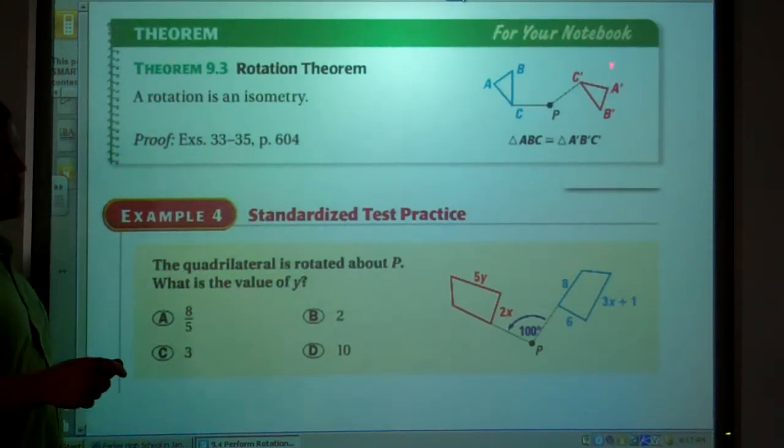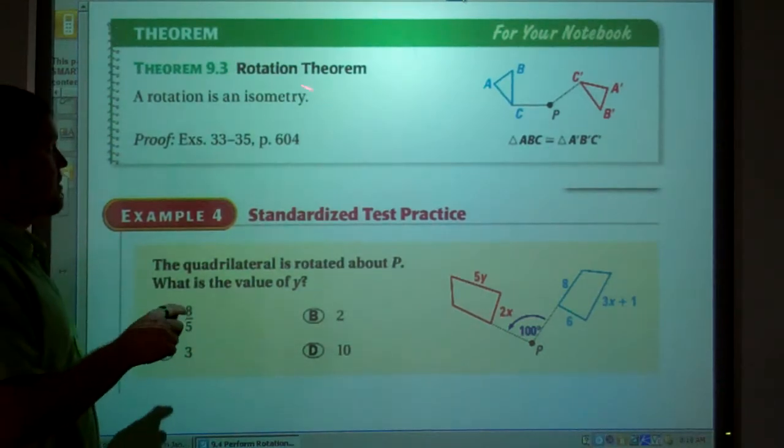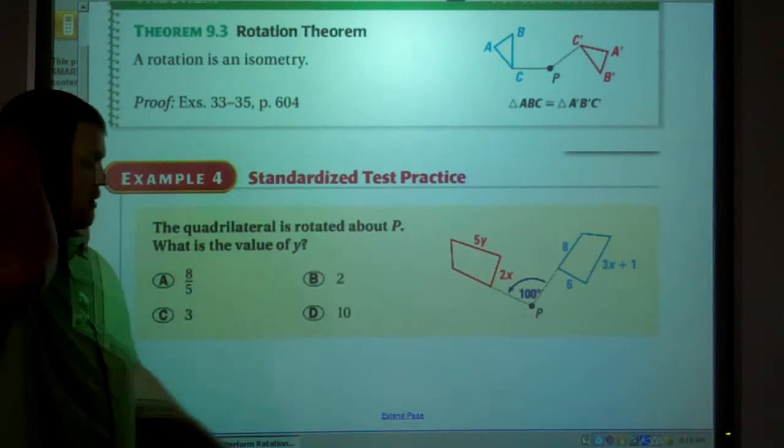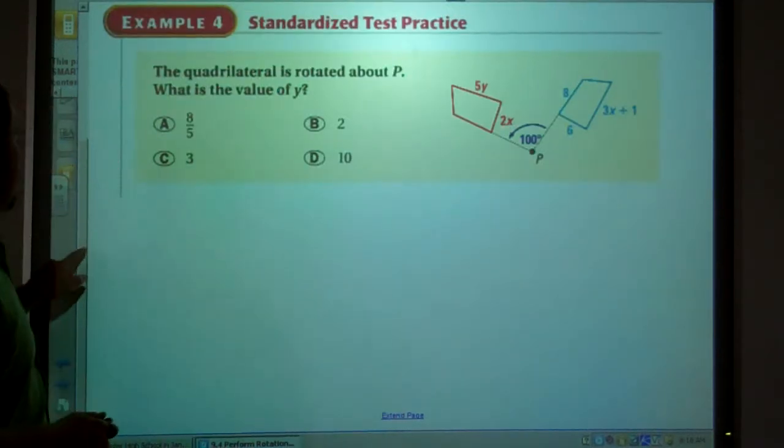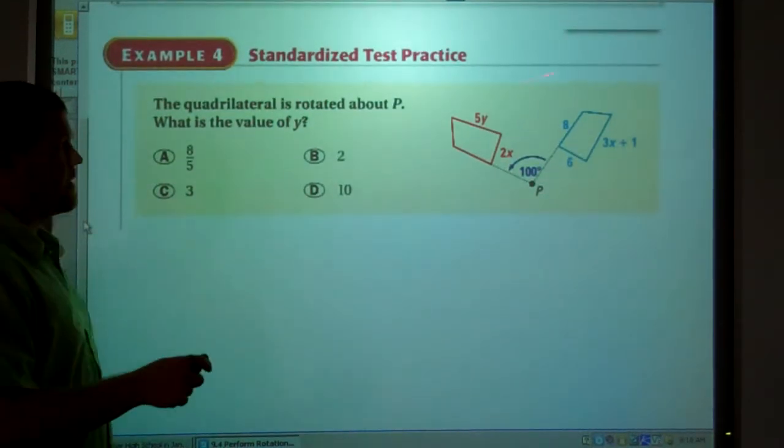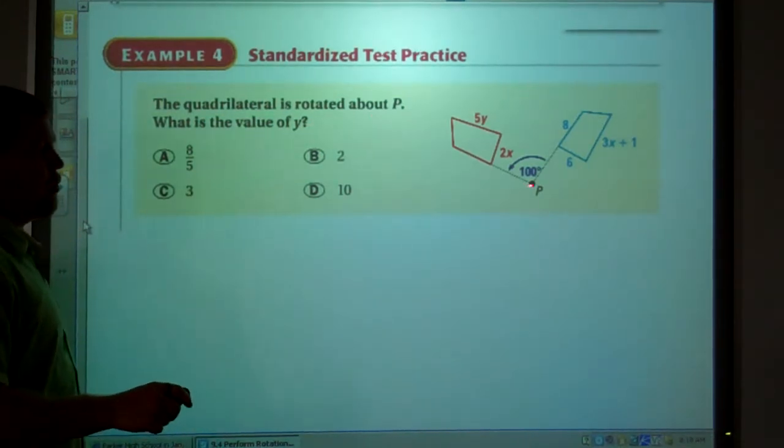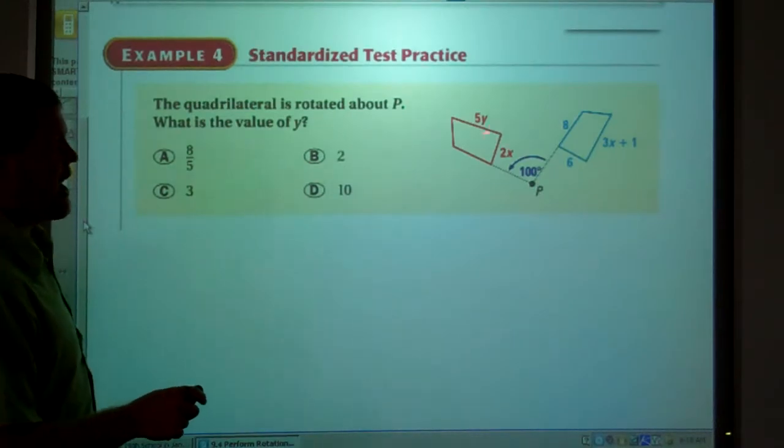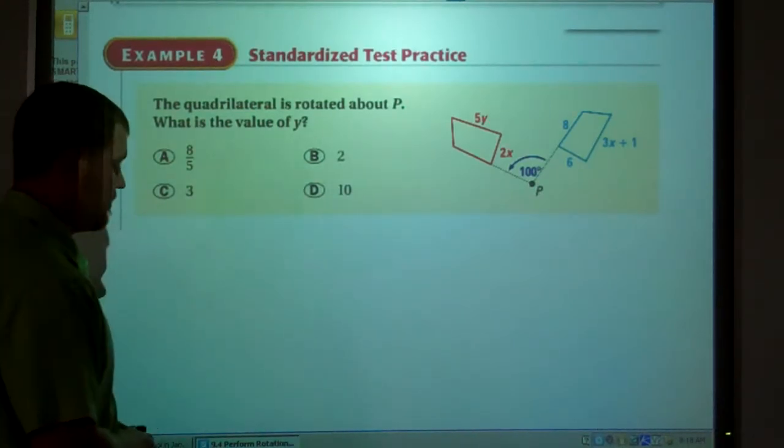Again, I've mentioned that a rotation is an isometry. And that means the figures are congruent. So knowing they're congruent, the figures are congruent, we've got these two figures here. It's rotated about point P, 100 degrees. What is the value of Y? We're trying to find out what Y is.